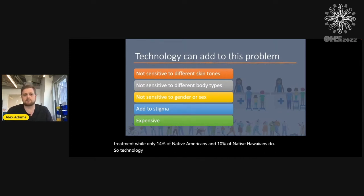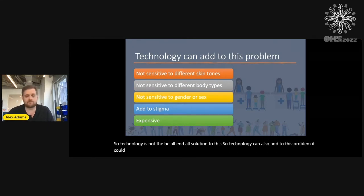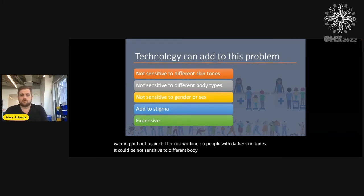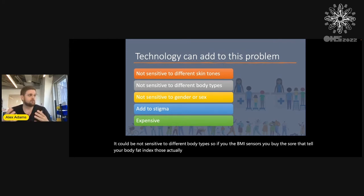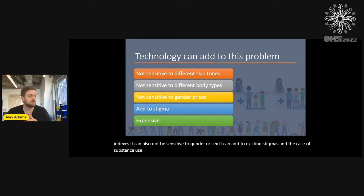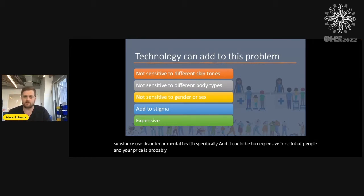Technology is not the be-all, end-all solution to this — technology can also add to the problem. It can be not sensitive to different skin tones, like the pulse oximeter, which recently had an FDA warning put out against it for not working on people with darker skin tones. It can be not sensitive to different body types — BMI sensors don't actually work on obese people. It can also be insensitive to gender or sex, can add to existing stigmas in the case of substance use disorder or mental health, and it can be too expensive. The price is probably the biggest inequity of all.